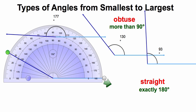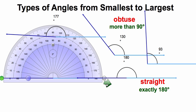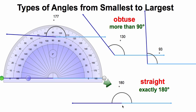Now a straight angle would be a straight line, so we want exactly 180 degrees. You know you have a straight line if it has exactly 180 degrees. And when you make a little half circle, it should look exactly like a half circle because 180 degrees is half of a circle.